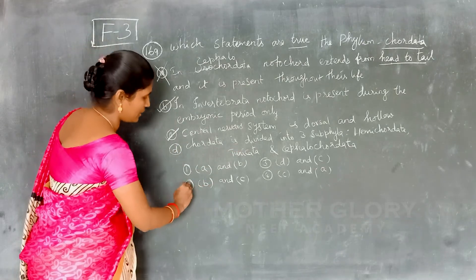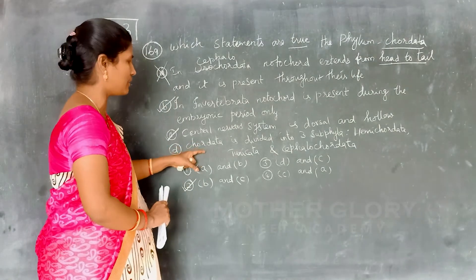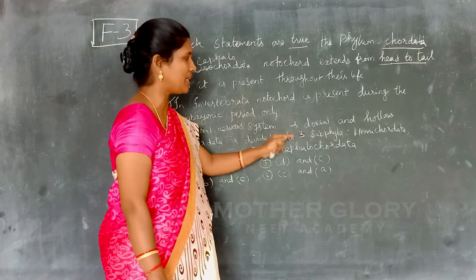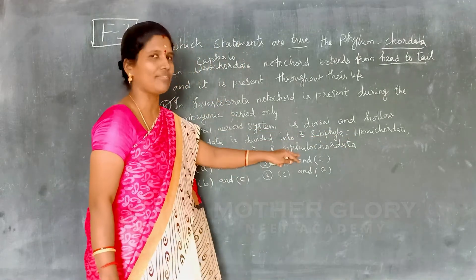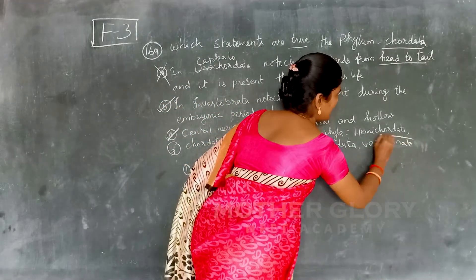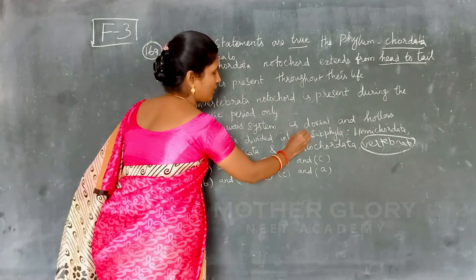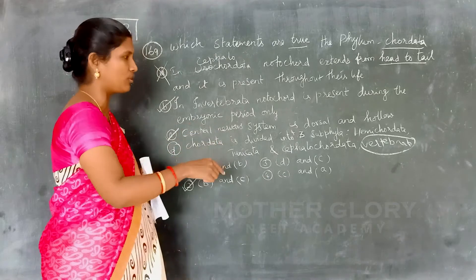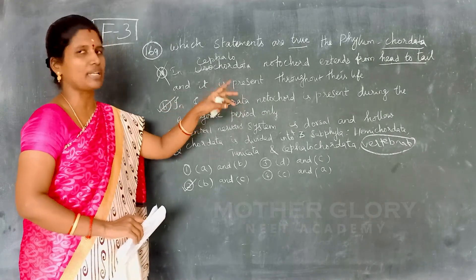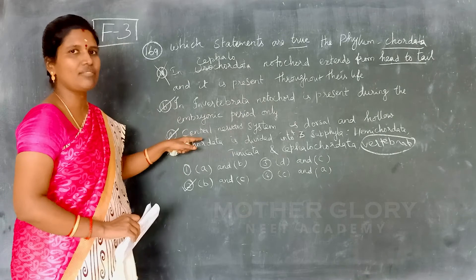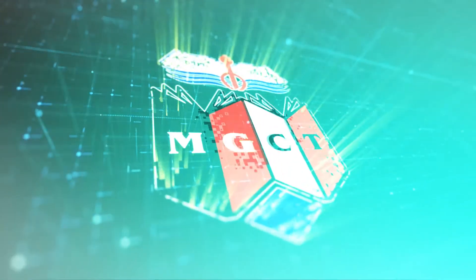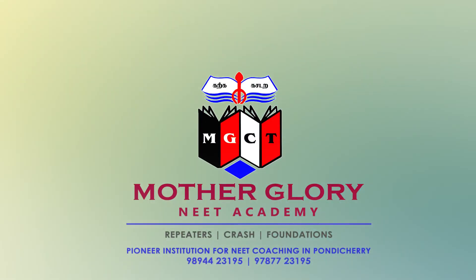So the answer is options B and C. The correct answers are: in vertebrates, the notochord is present in the embryonic stage, and the central nervous system is dorsal and hollow. The correct option is 2. Thank you.